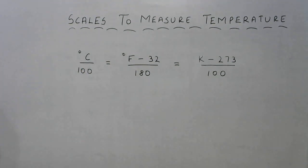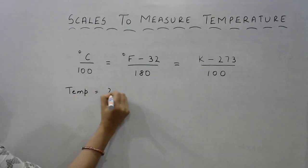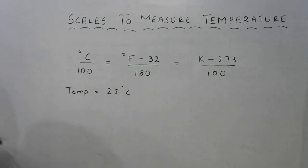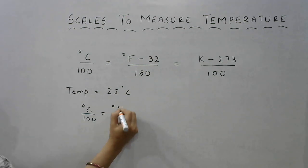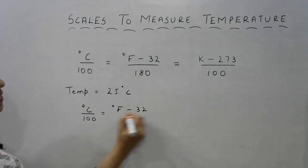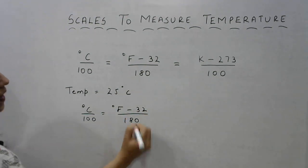Let us take one example here to understand it in a better way. Suppose we have a temperature of 25 degrees Celsius and you are supposed to convert this to degrees Fahrenheit. So we will be using this formula. What does the formula say? It says temperature on the Celsius scale upon 100 is equal to temperature on the Fahrenheit scale minus 32 upon 180.